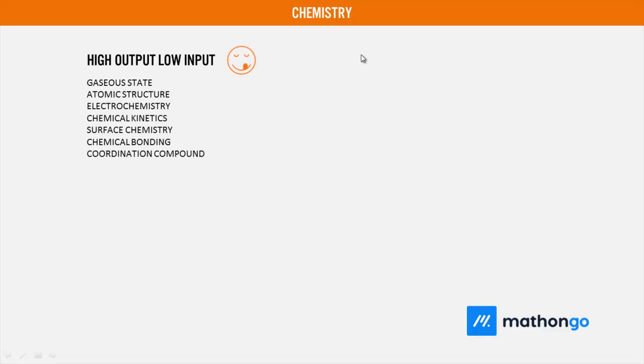Let's come to chemistry. Chemistry, again, if we go by high output low input: gaseous state, atomic structure, electrochemistry, chemical kinetics, surface chemistry, chemical bonding, and coordination compounds. Generally high output and low input, where are questions asked? If you notice, physical chemistry. Physical chemistry at JEE Mains level - there are many topics where they ask you simple questions. That is why we say this is low input and high output game.